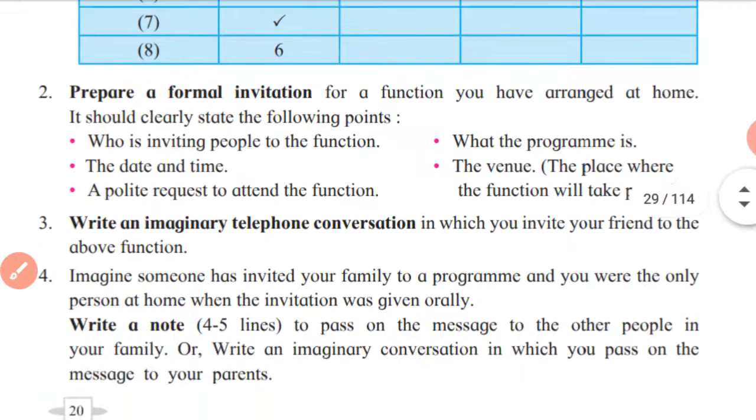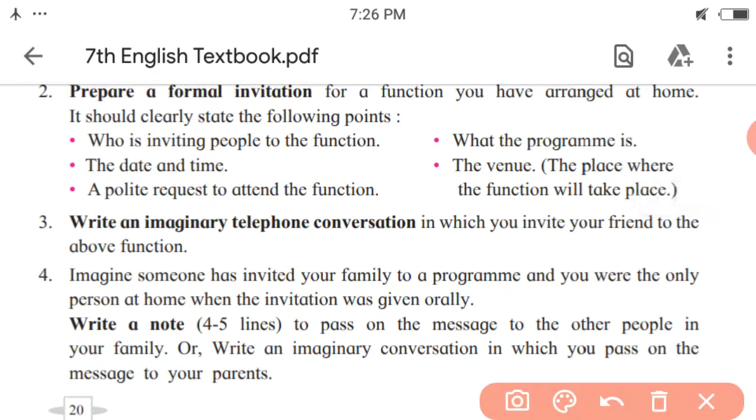Next activity. Prepare a formal invitation for a function you have arranged at home. It should clearly state the following points. So, the formal invitation must include the given points. What is that? Who is inviting people to the function? What the program is? The date and time. The venue. What is venue? The place where the function will take place. And the last, a polite request to attend the function.